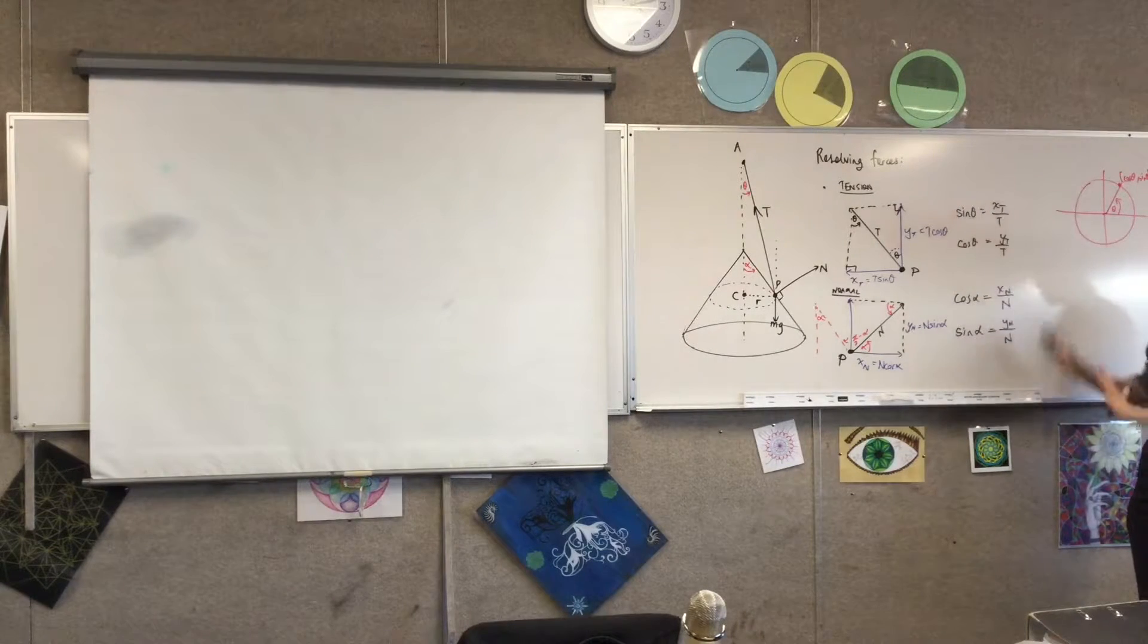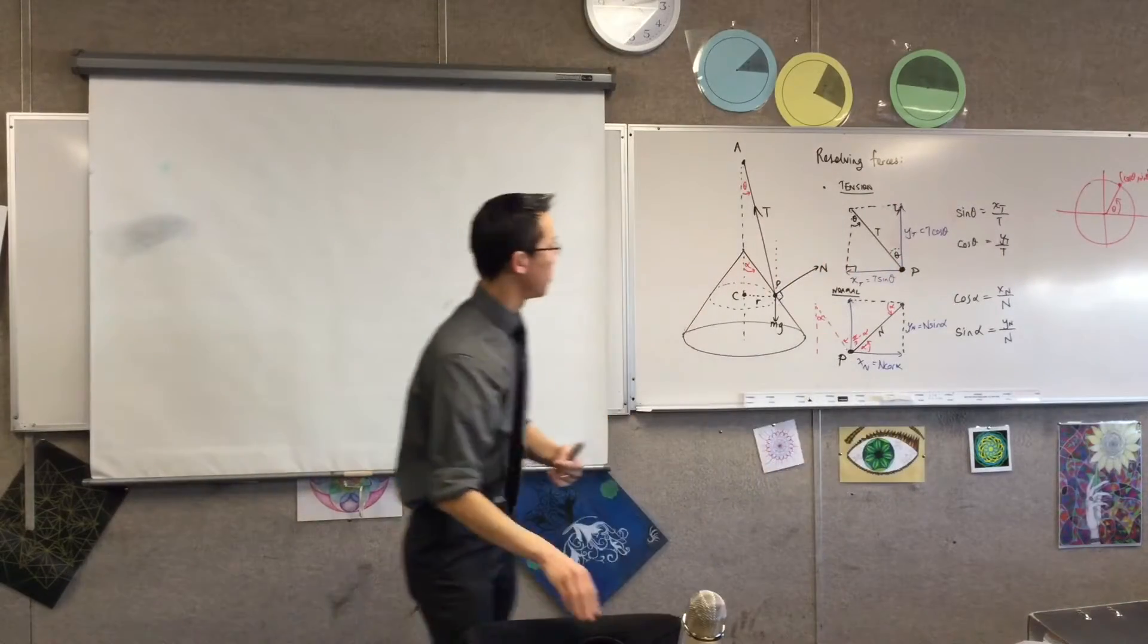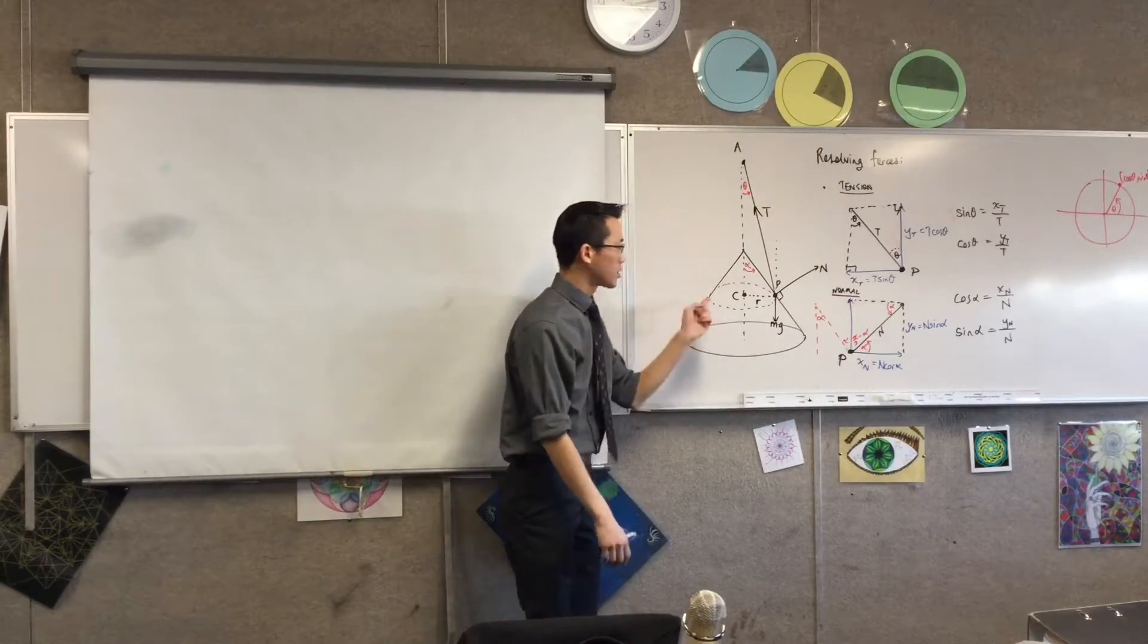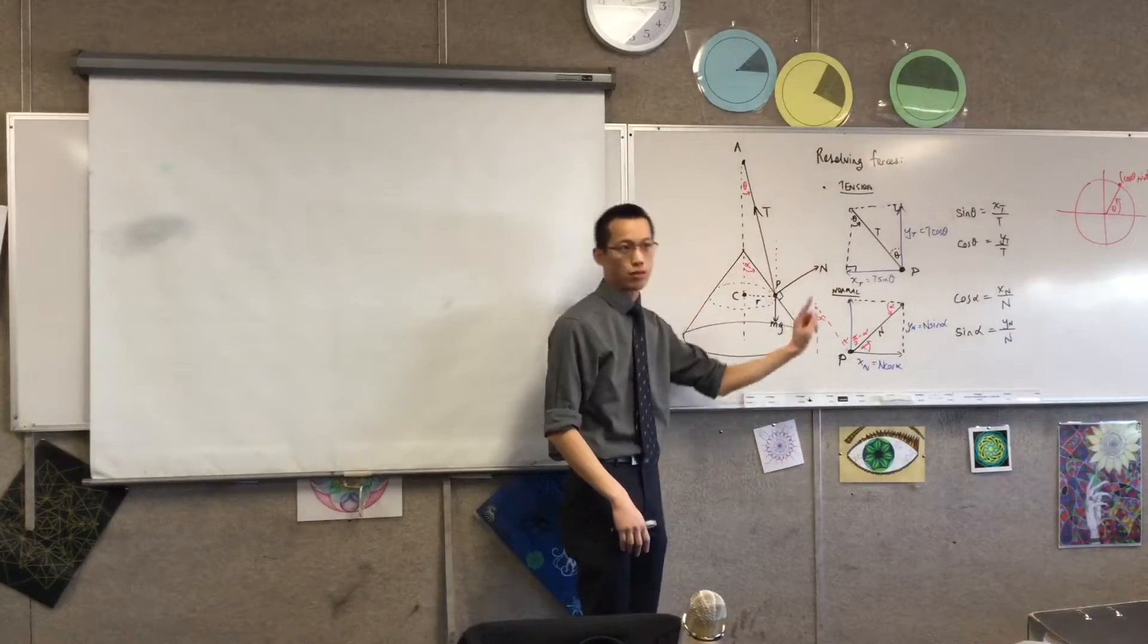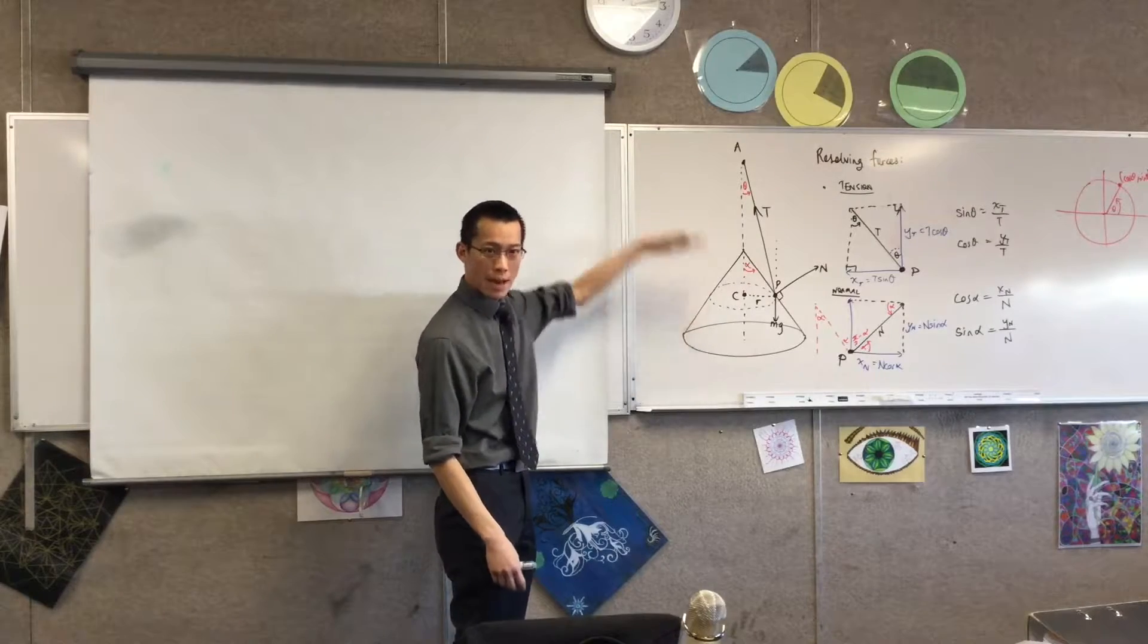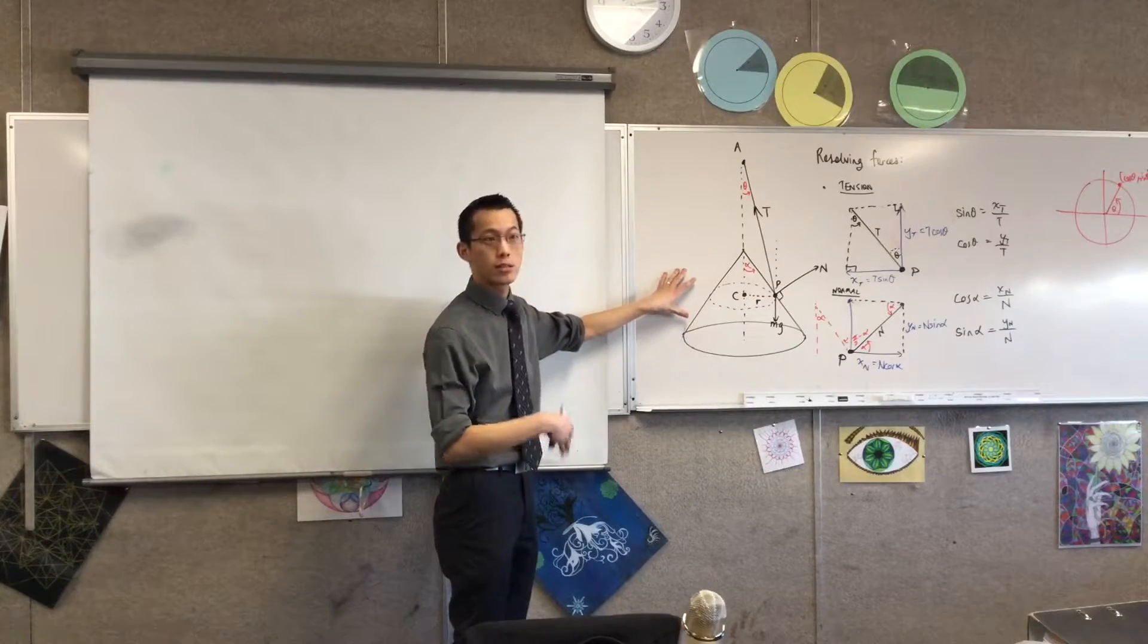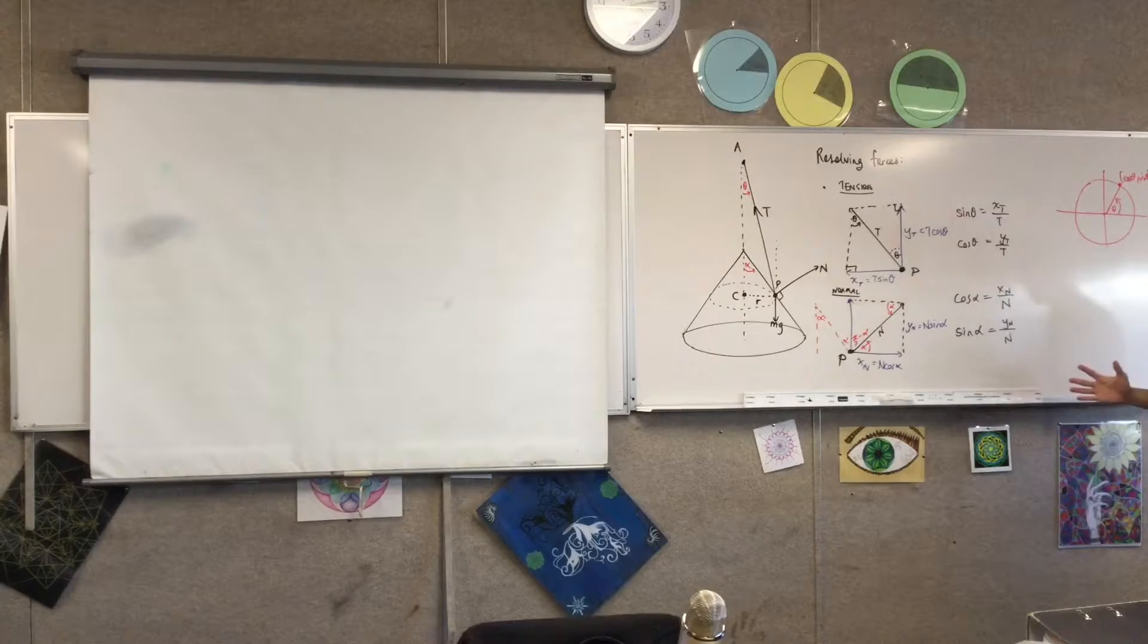All right. So I've got all of these forces resolved, but the last step that's important is to combine all of them to say, well, what's actually happening? And how do each of these bits and pieces contribute to what's happening? Okay? So this is said to you in the question. But it's moving in a horizontal circle, uniform circular motion. Okay? So that means on a vertical scheme, what's happening up and down? Nothing. Right? So on a vertical scheme, the net force is zero. Right?